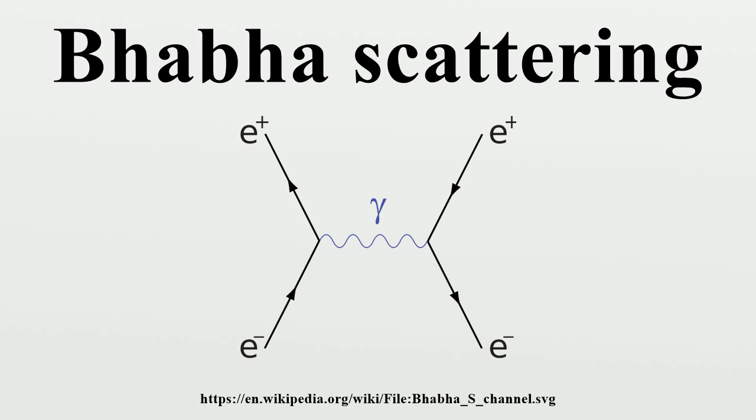Square of matrix element: To calculate the unpolarized cross-section, one must average over the spins of the incoming particles and sum over the spins of the outgoing particles. First, calculate scattering term magnitude squared of M sum over spins.